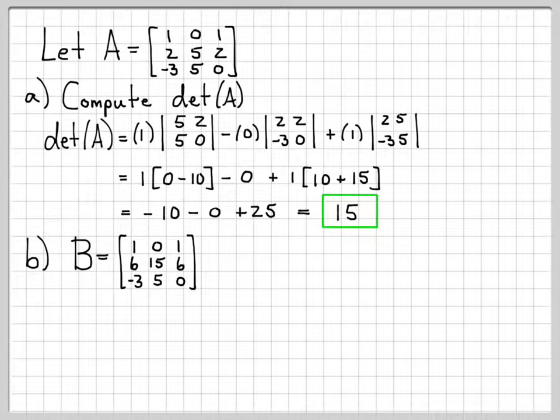So you can see the first row is exactly the first row that we had for matrix A. The third row is the exact same values that we had in matrix A as well. So rows 1 and 3 of matrix B match rows 1 and 3 of matrix A. The only difference between matrix A and matrix B is the second row.